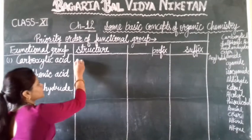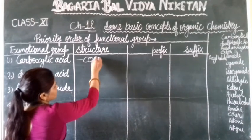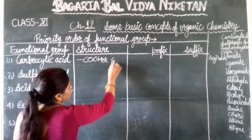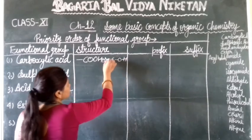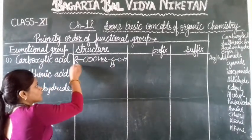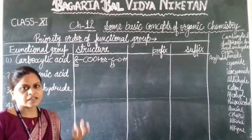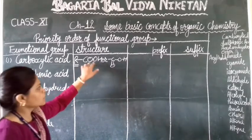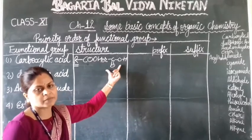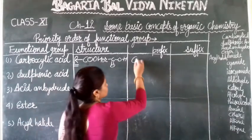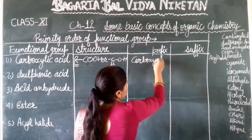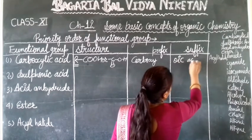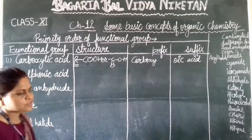The carboxylic acid functional group has the highest priority order for writing the suffix. The prefix is 'carboxy' and the suffix is 'oic acid'. So the suffix name is 'oic acid'.